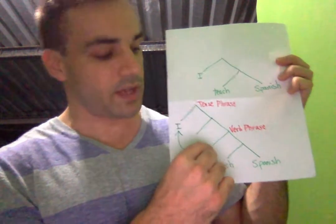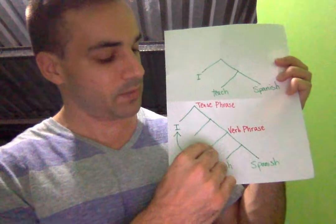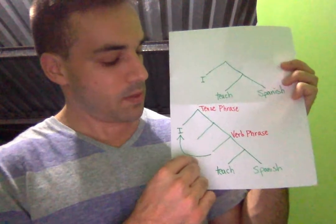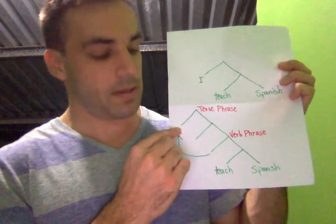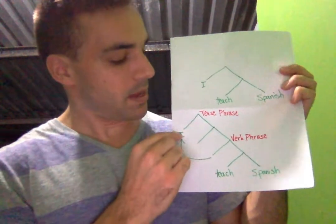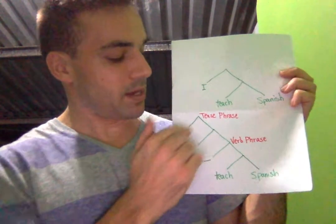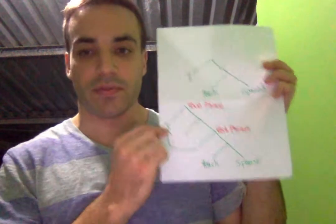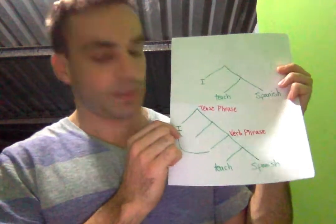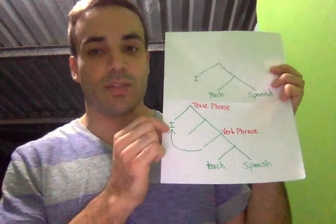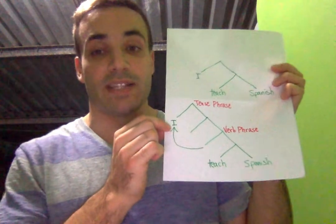This arrow shows that the subject — the word — has been moved up and is now in the tense phrase. This position is what gets defined as a subject.